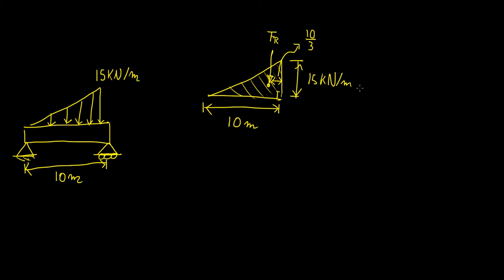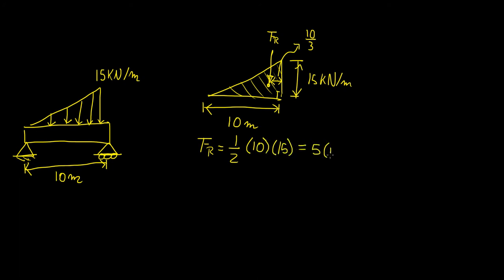The resultant force equals the area of the triangle: Fr = ½ × base × height = ½ × 10 × 15 = 5 × 15 = 75 kilonewtons.